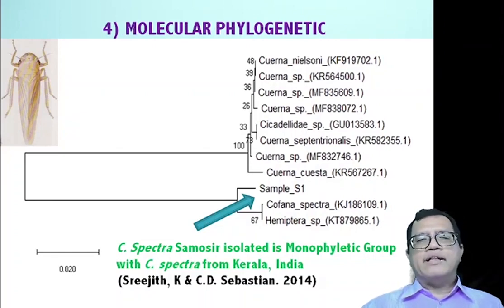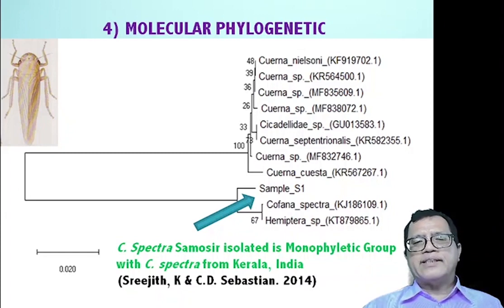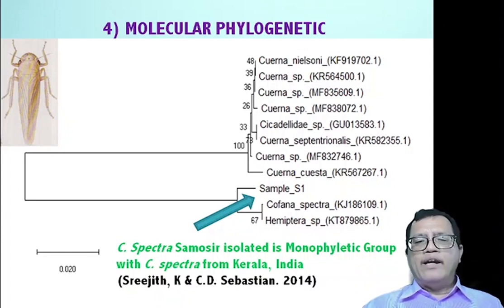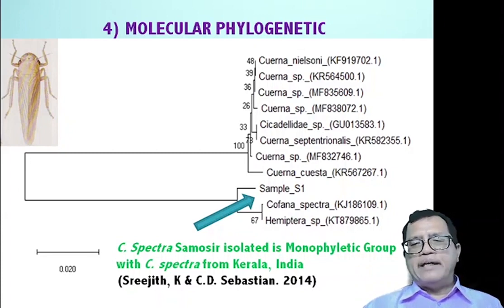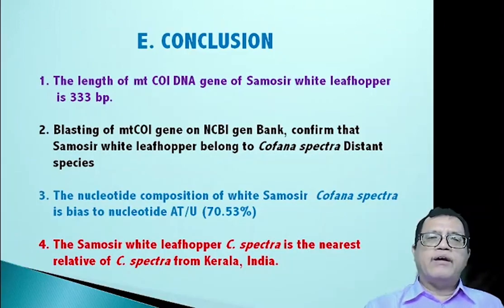Regarding the phylogenetic analysis based on molecular data, the result shows that the white leafhopper of Samosir Island — in this case sample SC1 — belongs to one group, identified as a monophyletic group with Copana Spectra from Kerala, India.